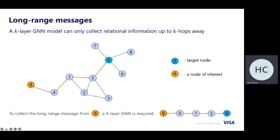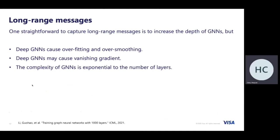The information from node 9 needs to pass through node 4, then node 1, node 5, and finally reach the target node 0 — requiring a four-layer GNN to collect that message. Long-range messages are very important when trying to capture very high-order information between two distant nodes in the graph.